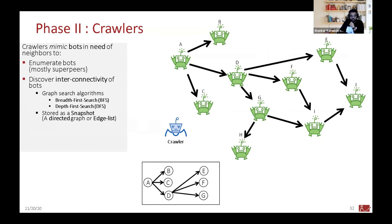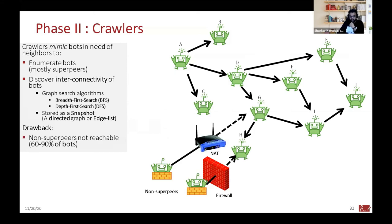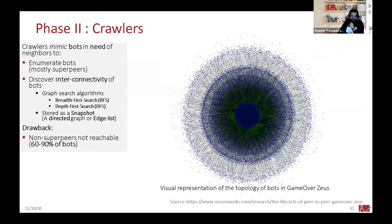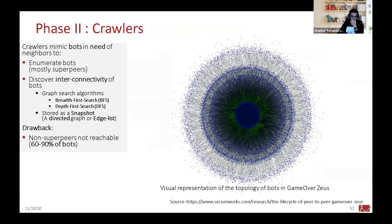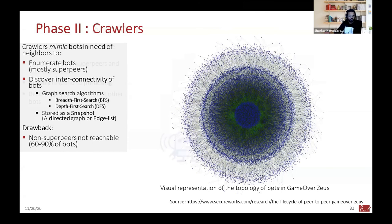This visual representation shows the topology of bots in Game Over Zeus on a particular date with graph layout applied. The green lines are edges showing who's connected to whom. The blue dots are the nodes. The large dense cluster in the middle shows nodes with many mutual neighbors, forming a very dense core with slightly sparse rings around it. This is how the botnet looked during its peak. The main drawback of crawling is that you can only crawl superpeers, missing 60 to 90 percent of the total botnet population.